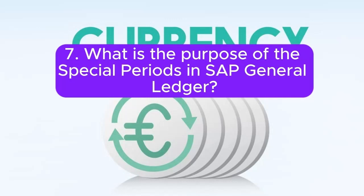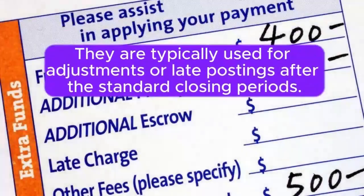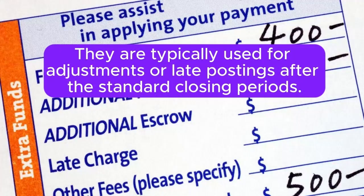Question 7: What is the purpose of the special periods in SAP General Ledger? Answer: Special periods allow for additional time for financial closings beyond the regular fiscal year. They are typically used for adjustments or late postings after the standard closing periods.